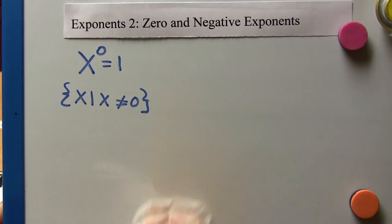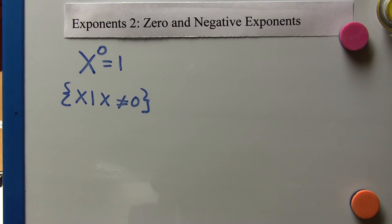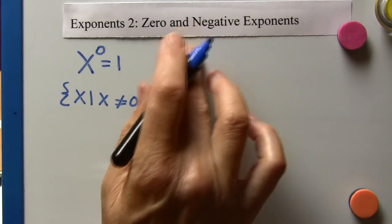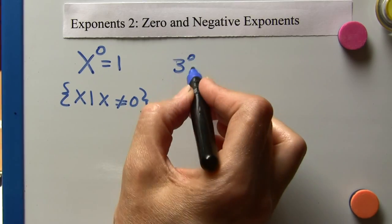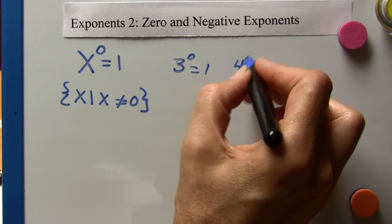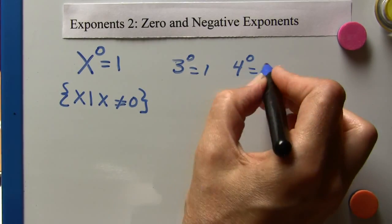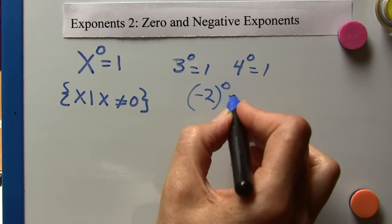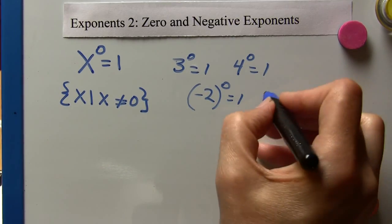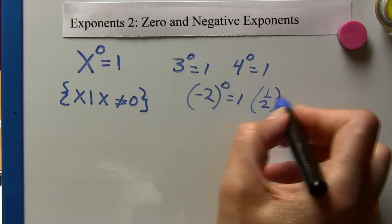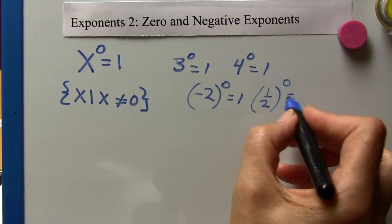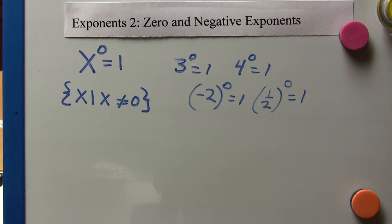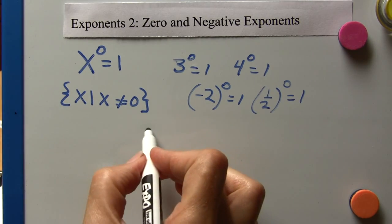Starting with x to the zero: anything raised to the zero is one. Three to the zero is one. Four to the zero is one. Negative two to the zero is one. One half to the zero is also one. Anything raised to the zero is one, except zero.